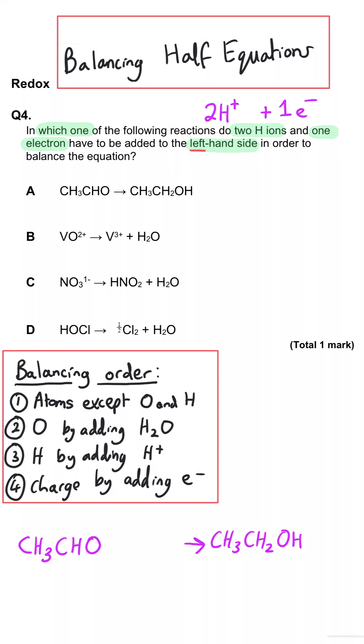A. Well, we've got an aldehyde on the left with two fewer hydrogen than the alcohol on the right-hand side. So we need to add two hydrogen ions to the left-hand side, so this is looking possible. But to balance the charge, we need to add two electrons to the left-hand side to make this work.